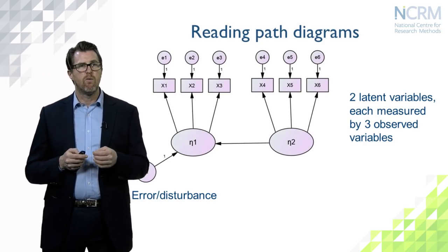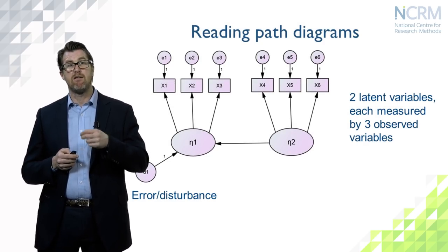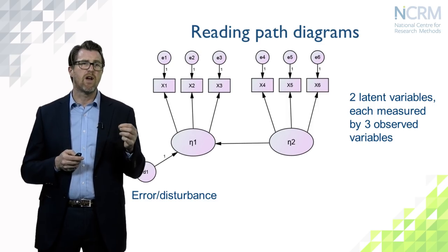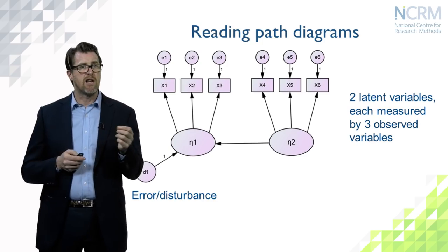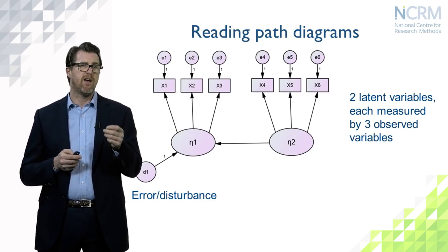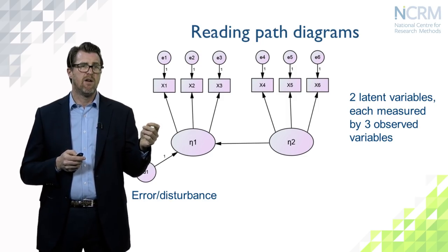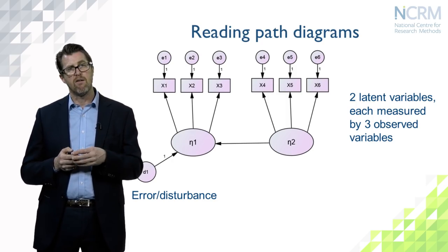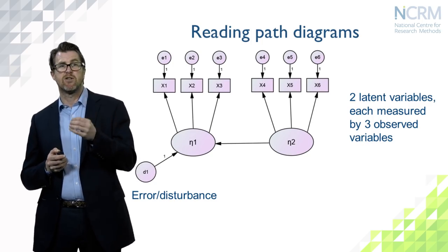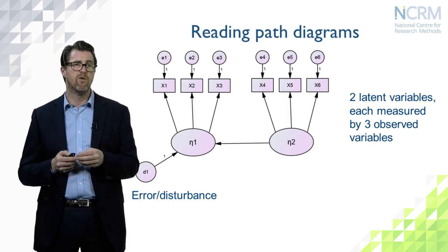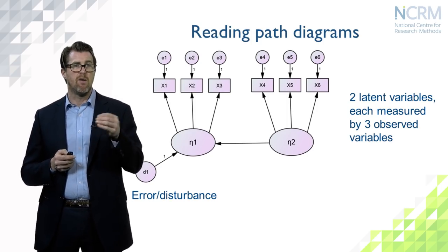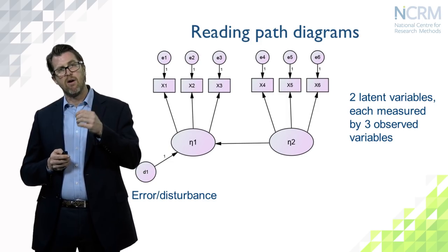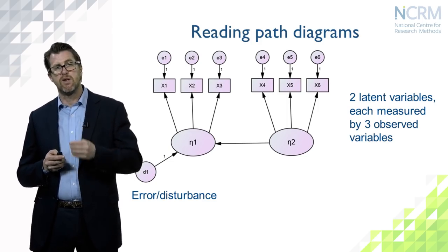In this path diagram we've introduced a theoretical statement about the direction of the relationship between eta1 and eta2. We no longer have the curved arrow but instead have a straight line with an arrow at one end, indicating that eta2 is a cause of eta1. This is similar to the first bivariate regression diagram, with eta1 regressed on eta2, and we solve for the unknown beta coefficient — but here it's a regression of one latent variable onto another.